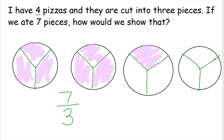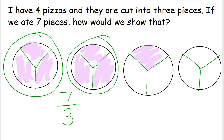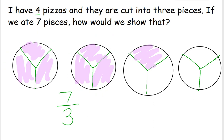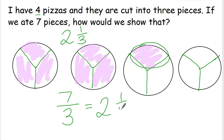Now, if we ate seven thirds of the pizzas, how many whole pizzas and extra pieces were eaten? You can see I ate this whole pizza and this whole pizza — that's two whole pizzas — and then I ate one piece of this pizza. So that would be the same as two and one third pizzas. Seven thirds equals two and one third.